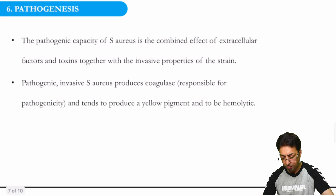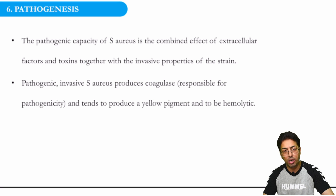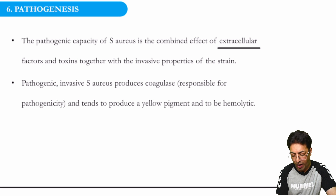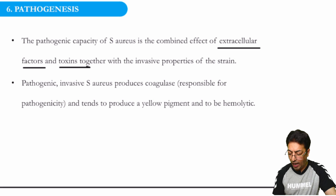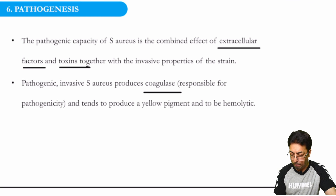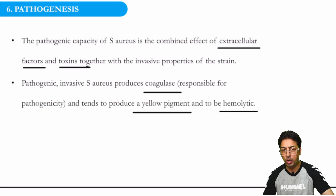Now, why is Staph pathogenic? The pathogenic capacity of Staph aureus is due to multiple factors — extracellular factors and toxins which are responsible for its invasiveness. Coagulase is one important enzyme responsible for pathogenicity, along with the characteristic yellow pigment and hemolysis. Hemolysis is one important characteristic feature of Staph aureus.